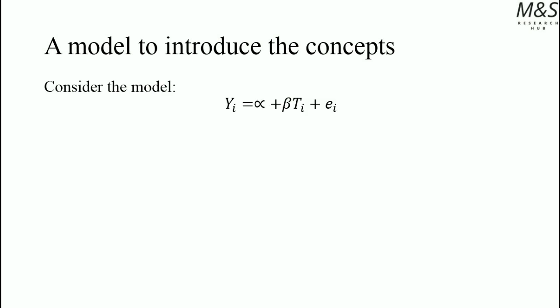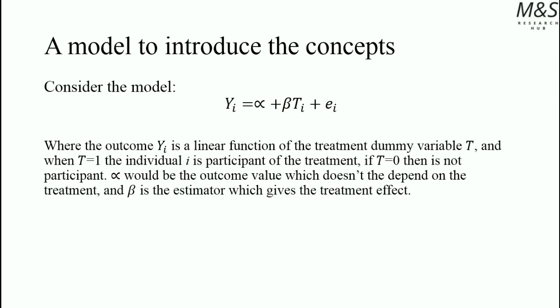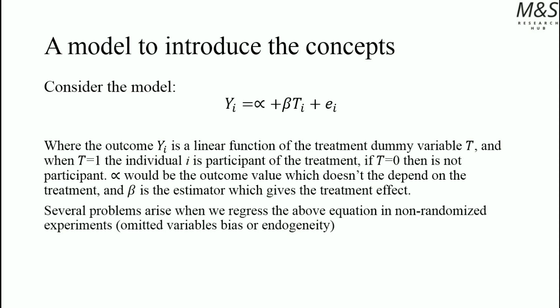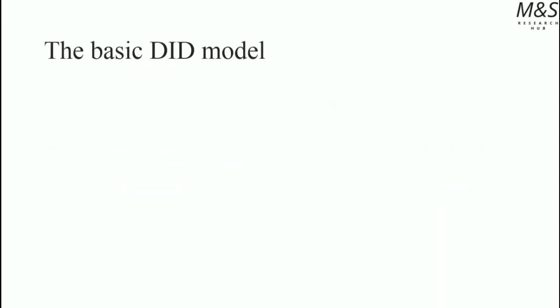Consider the basic model: y_a equals alpha plus beta times the treatment effect dummy variable t, plus an error term. The outcome y is a linear function of the treatment dummy variable t. When t equals 1, individual a is a participant of the treatment; if t equals 0, they are not a participant. Alpha is interpreted as an outcome variable which does not depend on the treatment, and beta is the estimator which gives the treatment effect. Several problems arise when regressing this equation in non-randomized experiments: omitted variable bias and endogeneity, which violates the assumption of conditional exogeneity. In non-randomized experiments, which are usually the case in public programs, we need to introduce the difference-in-difference model approach to evaluate the average treatment effect.